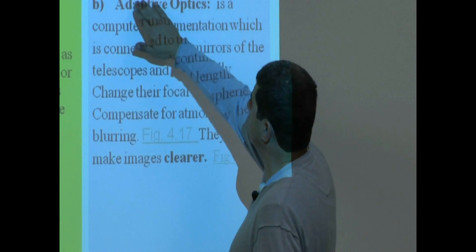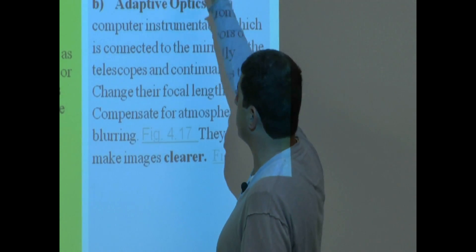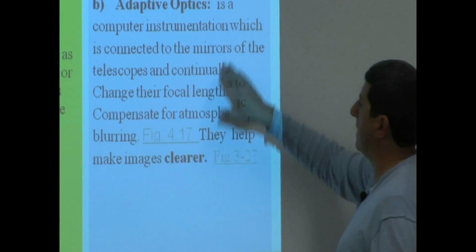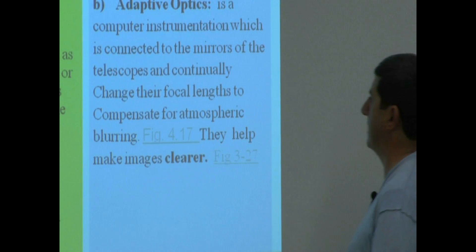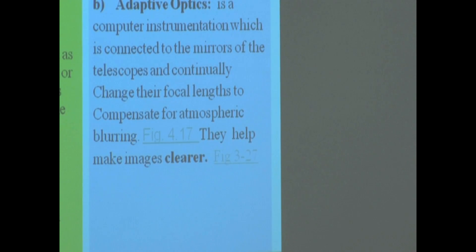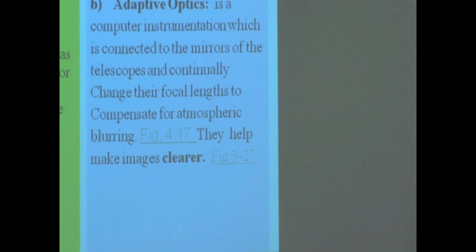So, primarily, CCDs make them brighter, but they also make them clearer. The adaptive optics makes them clearer, a lot more clearer, and you don't have the fuzziness, the shadiness that you have with the atmospheric blurring.